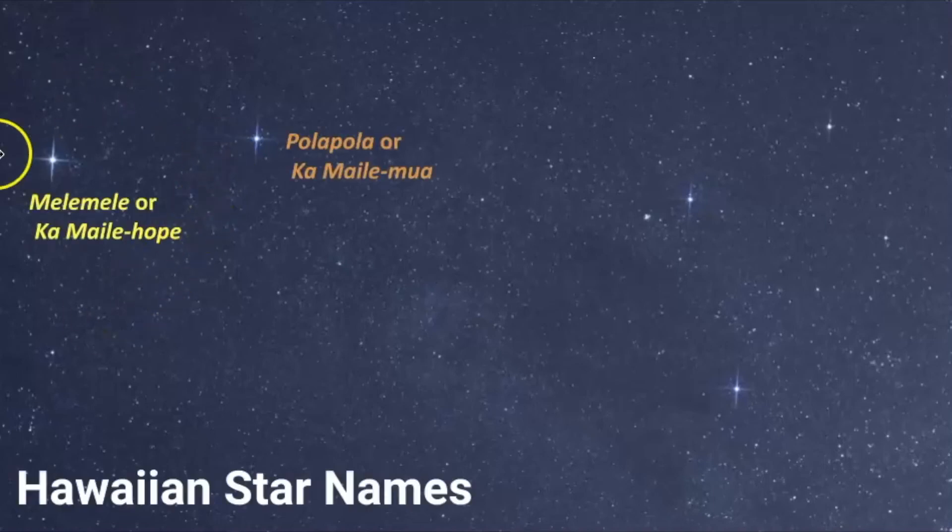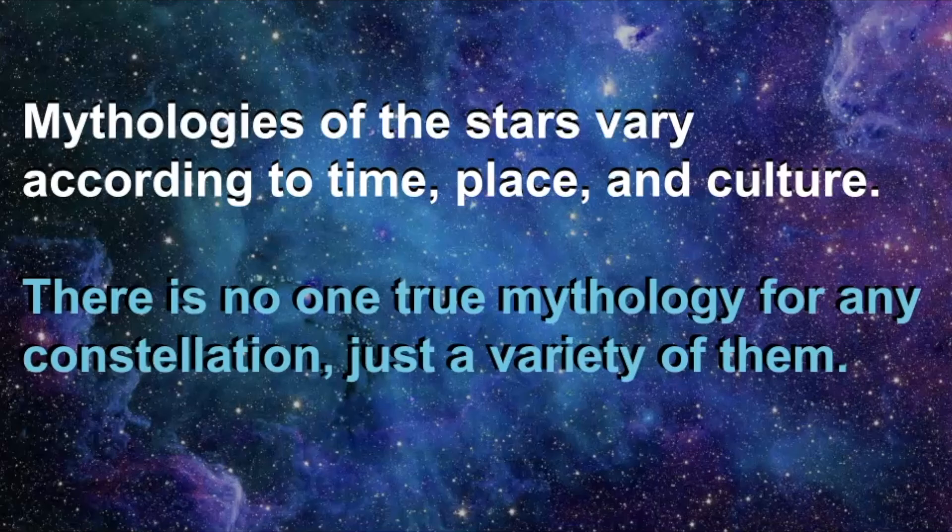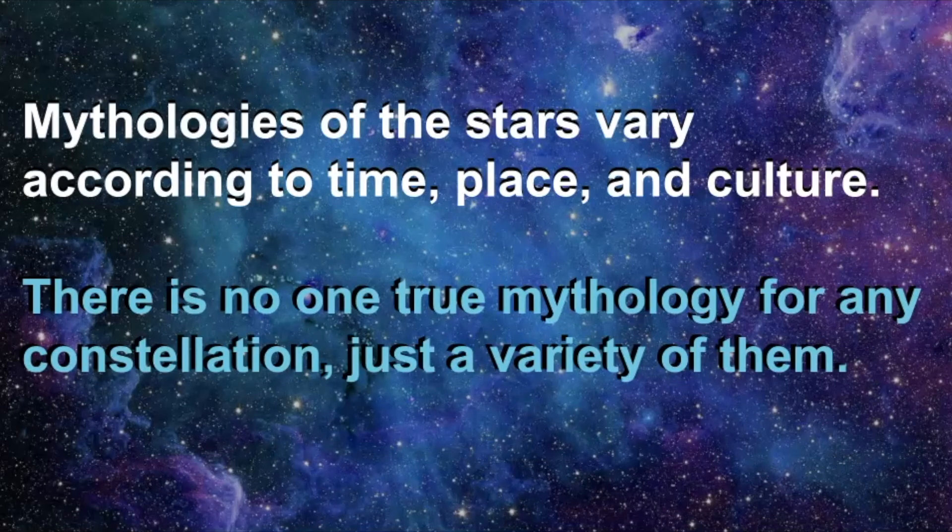So there's also something else I wanted to share. I came across the Hawaiian star names for these. So this right here is Alpha Centauri and Beta Centauri. So I was able to discover that the Hawaiian star name for Alpha Centauri is Mele Mele. I've also had it or discovered it could be called Ka Maile Hope. And then Beta Centauri is known as Pola Pola or Ka Maile Mua. So just some different background there. I don't have stories connected to these, but whenever I find something in the Hawaiian culture, it's something that I'm very fascinated with and I love to learn and study. So I thought it'd be great to include that here, but you have to remember that the mythologies of the stars vary according to time, place, and culture. There really is no one true mythology for any constellation. There's simply a variety of them.